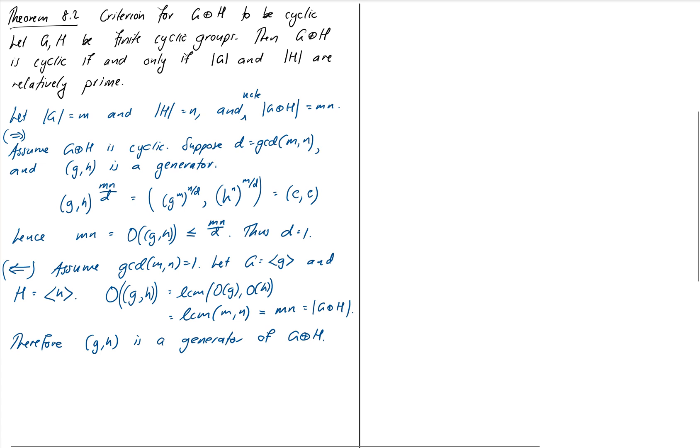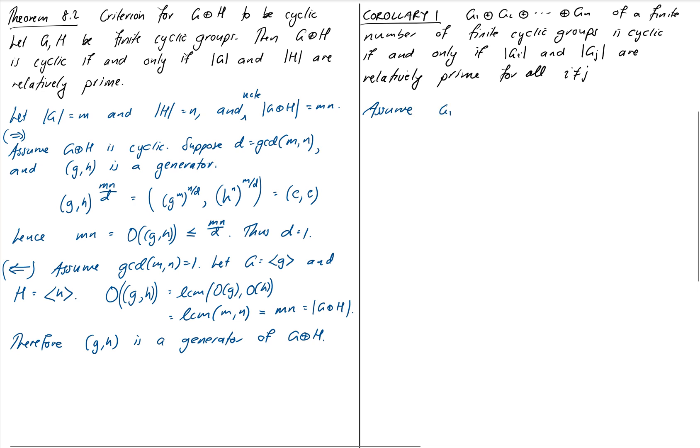We'll state a couple of corollaries to make it more broadly applicable. The first corollary extends to a number of groups rather than just two. You've got a collection of finite cyclic groups, and the external direct product is cyclic if and only if the orders of any pair of groups you choose are relatively prime for all i not equal to j. We'll do an induction proof. We'll assume it's true for some M.